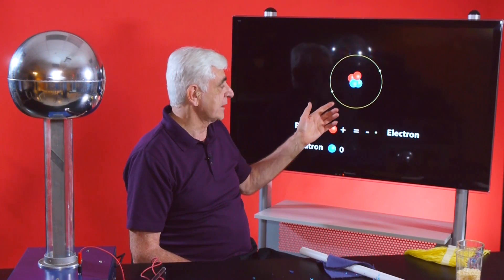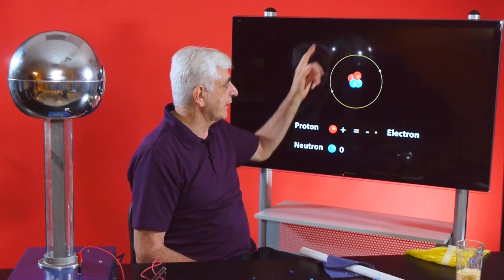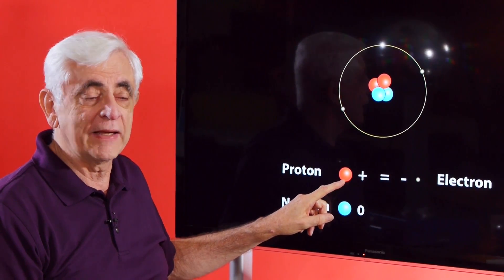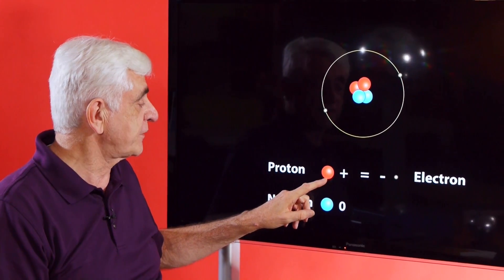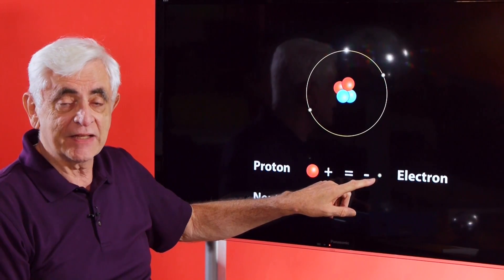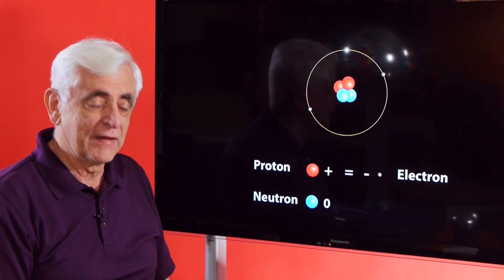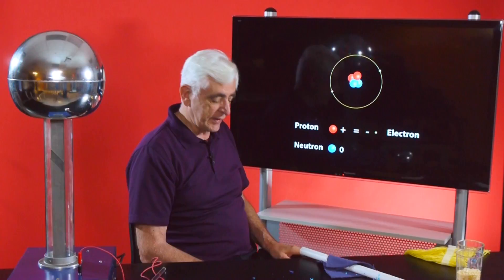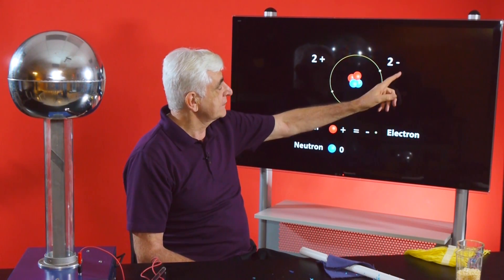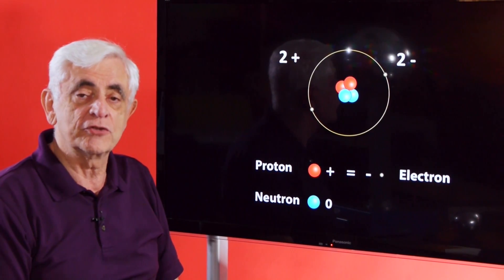Let's take the atom of helium. It's got two protons, two neutrons, and two electrons going around it. It turns out protons have an electrical charge, and by definition we call that a positive charge. The electron has, by definition, a negative electric charge. And the neutron has no charge at all. So this very simple atom has two protons — two positive charges — and two electrons — two negative charges. They balance out, so it's a neutral atom.